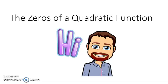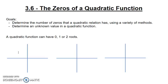Hi, and welcome to Mr. Hamilton's Math Bytes. This video is about the zeros of a quadratic function, which you might also refer to as the x-intercepts. We have two goals for today. The first is to determine the number of zeros a quadratic relation has using a variety of methods. The second is to determine an unknown value in a quadratic function.